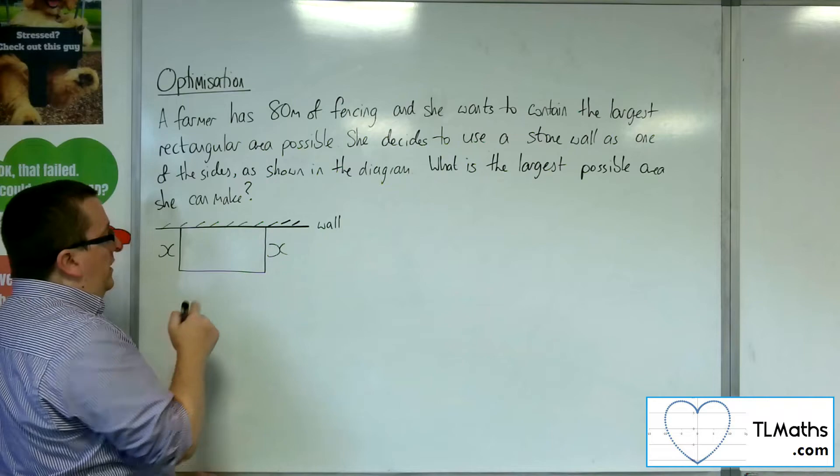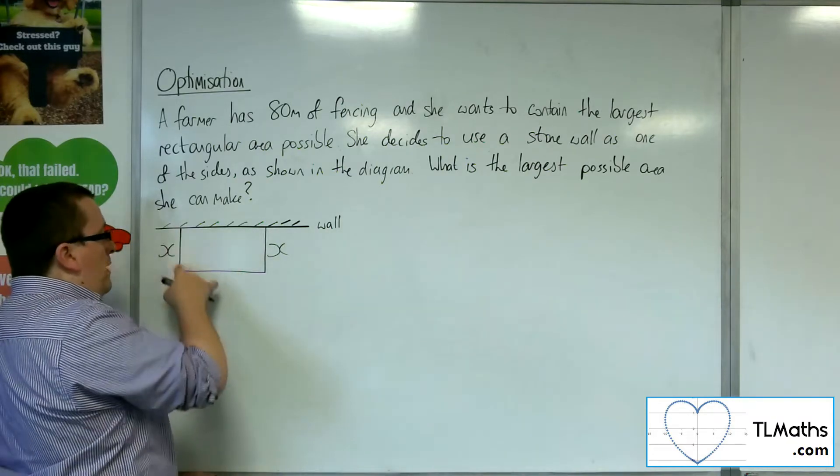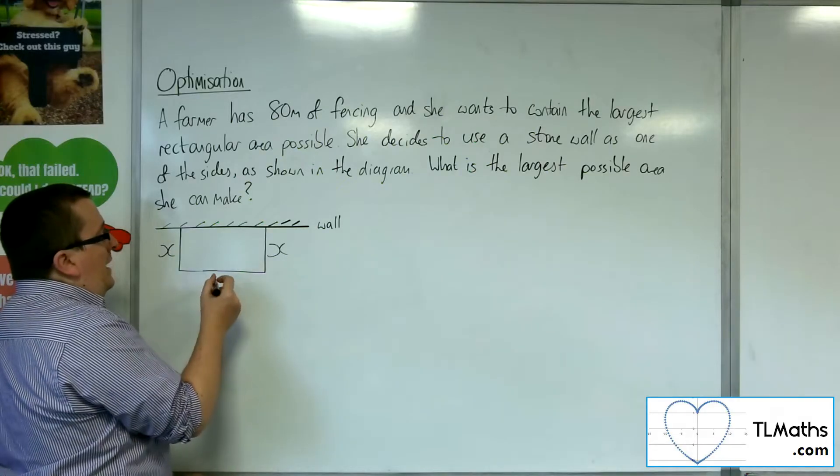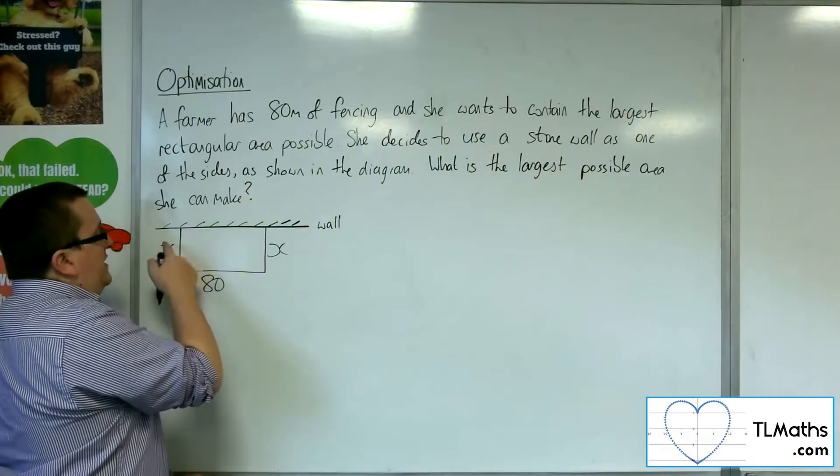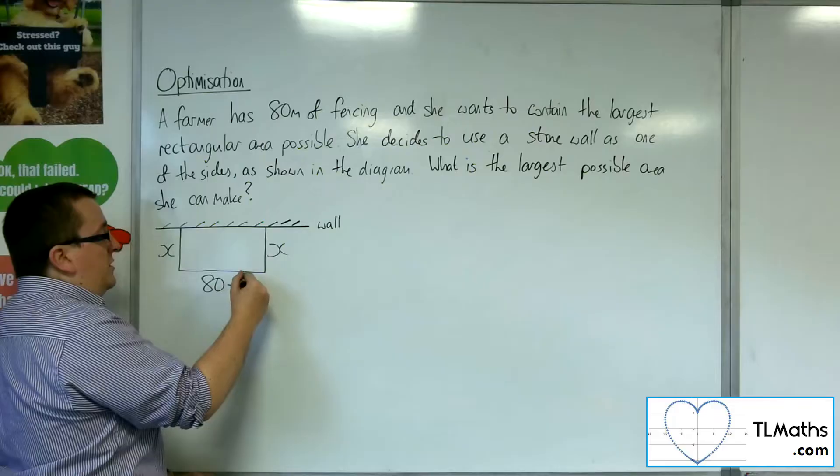we let that be x, then both those sides will be x. Now if all the way around is 80 meters, then that means that this side will be the full 80 meters, take away the lengths of those two sides. So take away x, take away x, so take away 2x.